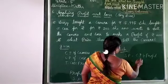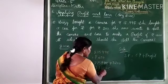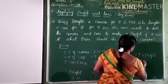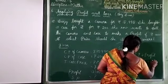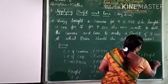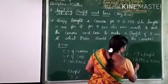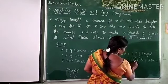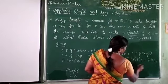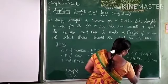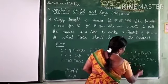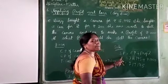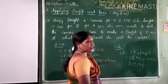So cost price is the total cost price — rupees 16,995. Profit is rupees 1000. So we add both values: 16,995 plus 1000 equals rupees 17,995. So rupees 17,995 is the selling price of the camera and the case.